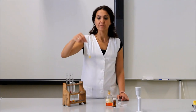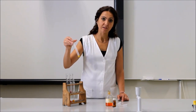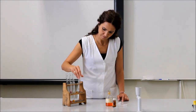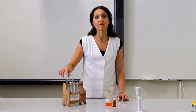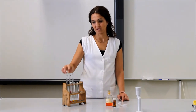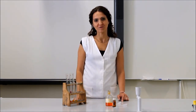A harmadik kémcsőben megint a sárga színt látjuk. Ez azt jelenti, hogy ez a semleges kémhatású oldat. Ezek szerint tehát az első kémcsőben hidrogén-klorid oldat van, a harmadik kémcsőben pedig desztillált víz. A második kémcsőben pedig nátrium-hidroxid oldat van. Viszontlátásra!